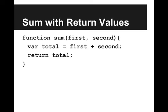So let's revisit our sum function but write it with return values. We have a function called sum, it takes in parameters first and second, which are the two numbers that we want to add. We'll declare a variable called total, which we set equal to first plus second, and then return total, where we're going to return that sum back to the caller.